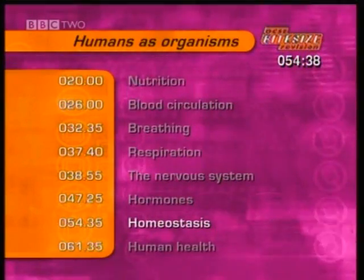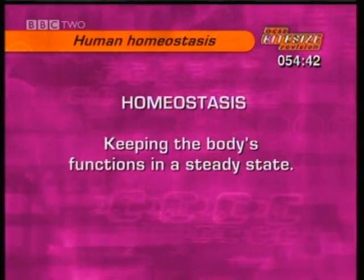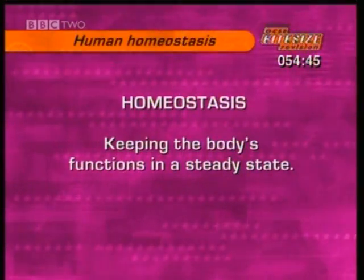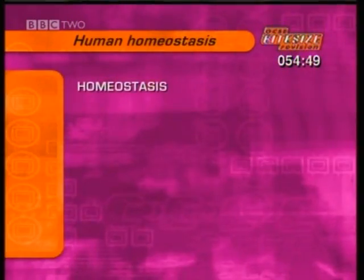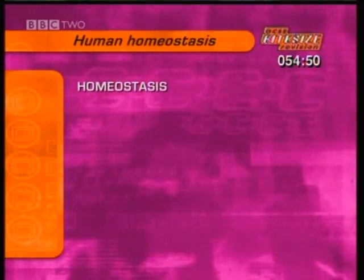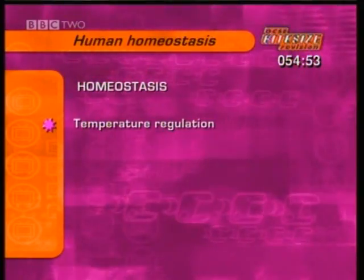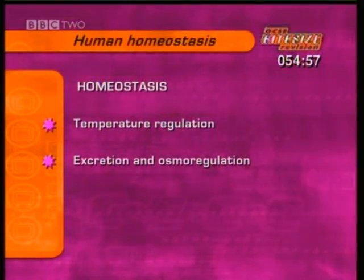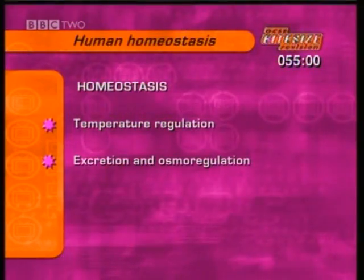This section is about homeostasis. Homeostasis means keeping our body's functions in a steady state so everything works properly. We're going to look at how the body regulates temperature, and how the kidneys control excretion and osmoregulation — that's how water levels in the blood are regulated.